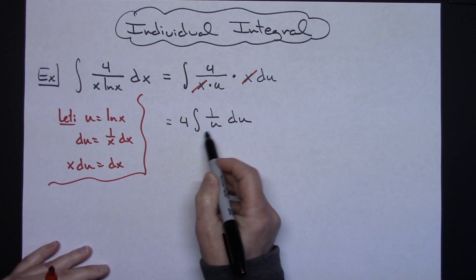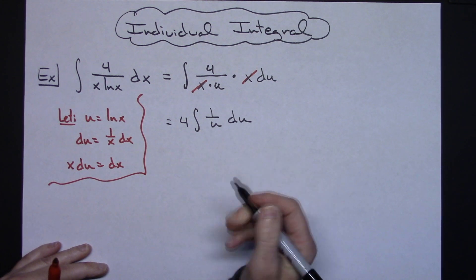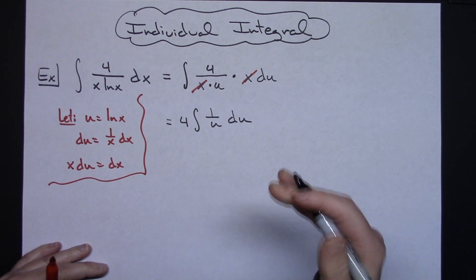All right, hopefully you have this memorized. You're integrating 1 over u. That's going to be the natural log absolute value of u.